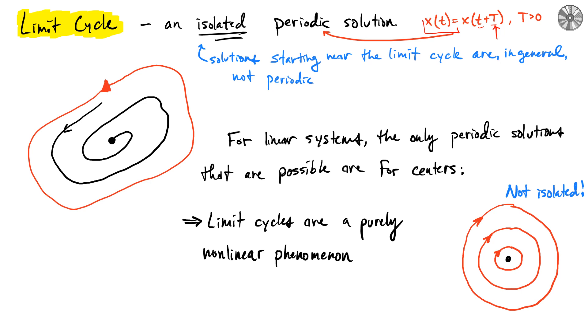Typically, in general, the limit cycle is isolated, which means that if you're slightly off of the limit cycle, that is no longer a periodic solution. That means there's going to be some behavior inside and some behavior outside.